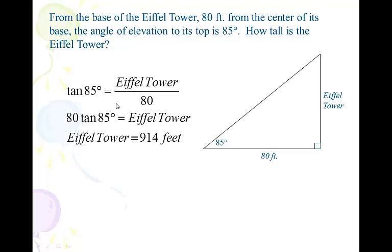The tangent of 85 degrees is equal to the Eiffel Tower over 80. Don't mess up this Algebra 1 stuff — multiply both sides by 80, so 80 tangent of 85 degrees equals the Eiffel Tower. I picked a horrible variable name there. The nice thing is your calculator stays in degree mode for this entire lesson, and the Eiffel Tower comes out to 914 feet. Although they would probably do it in meters and make fun of us for using feet, but that's no big deal.